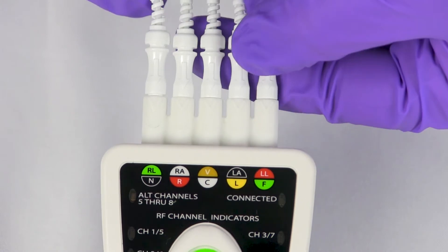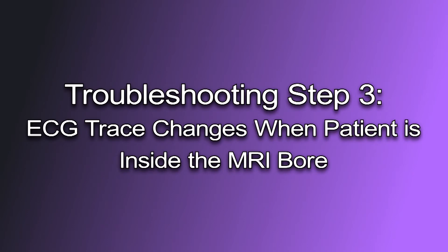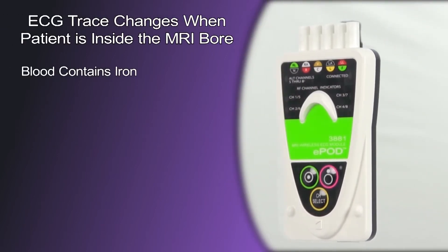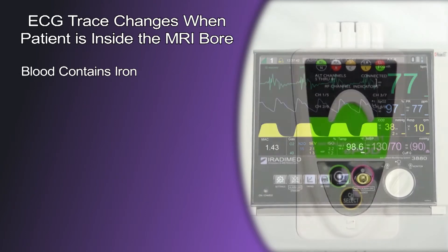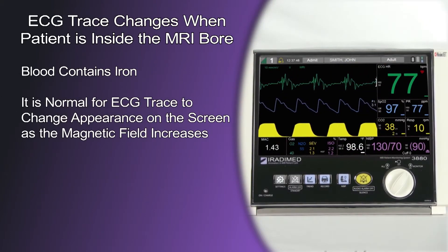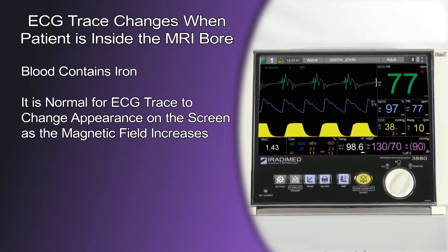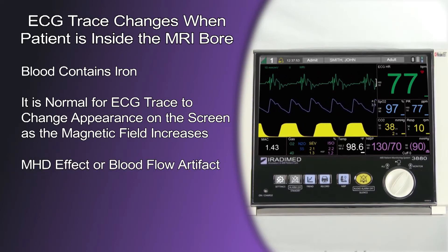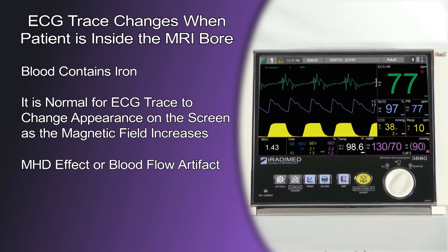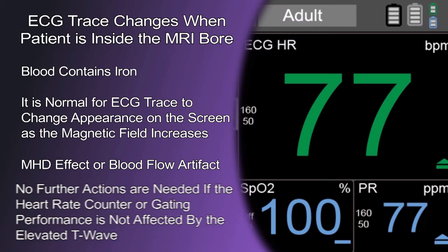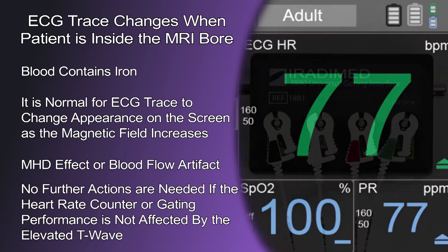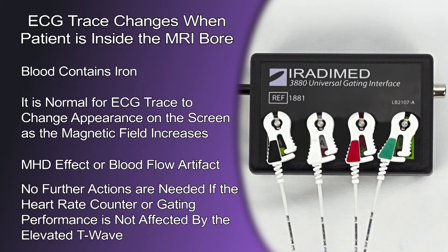Broken lead wires often have an ECG trace with no baseline. Troubleshooting Step 3: ECG trace changes when patient is inside the MRI bore. Blood contains iron and the blood inside the MRI scanner creates a small signal; it is normal for the ECG trace to change appearance on the patient monitor screen as the magnetic field increases. This phenomenon is referred to as the MHD effect or flow artifact. The stronger the magnetic field, the more potential for an elevated T wave. No further actions are needed if the heart rate counter or gating performance is not affected by the elevated T wave.